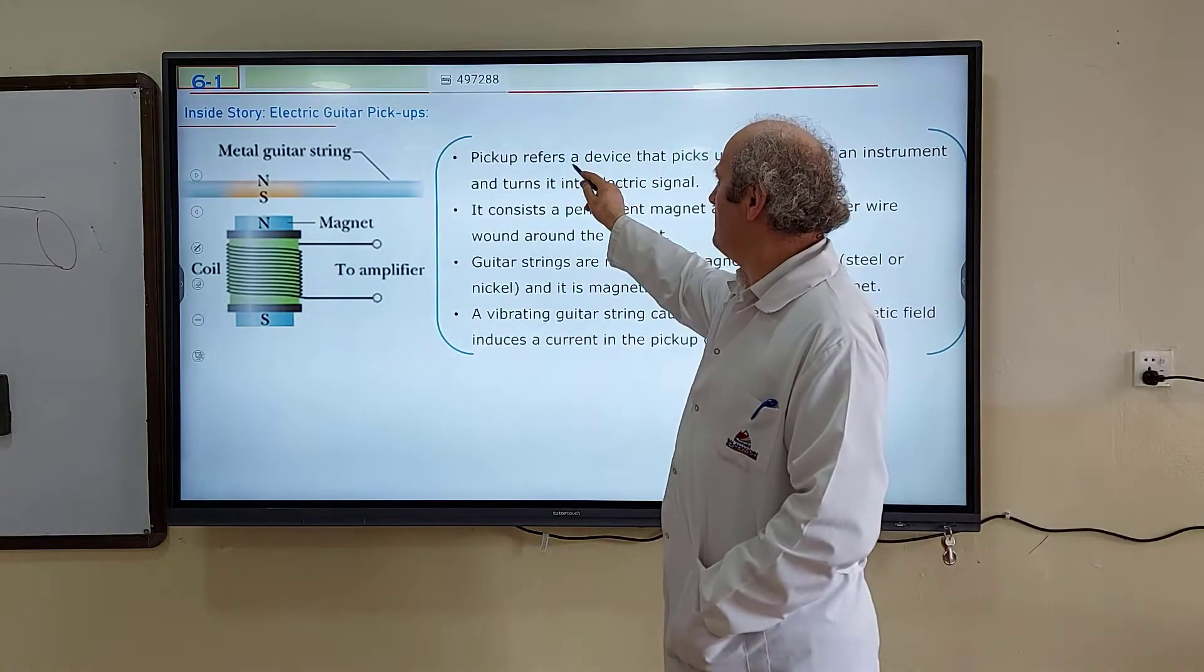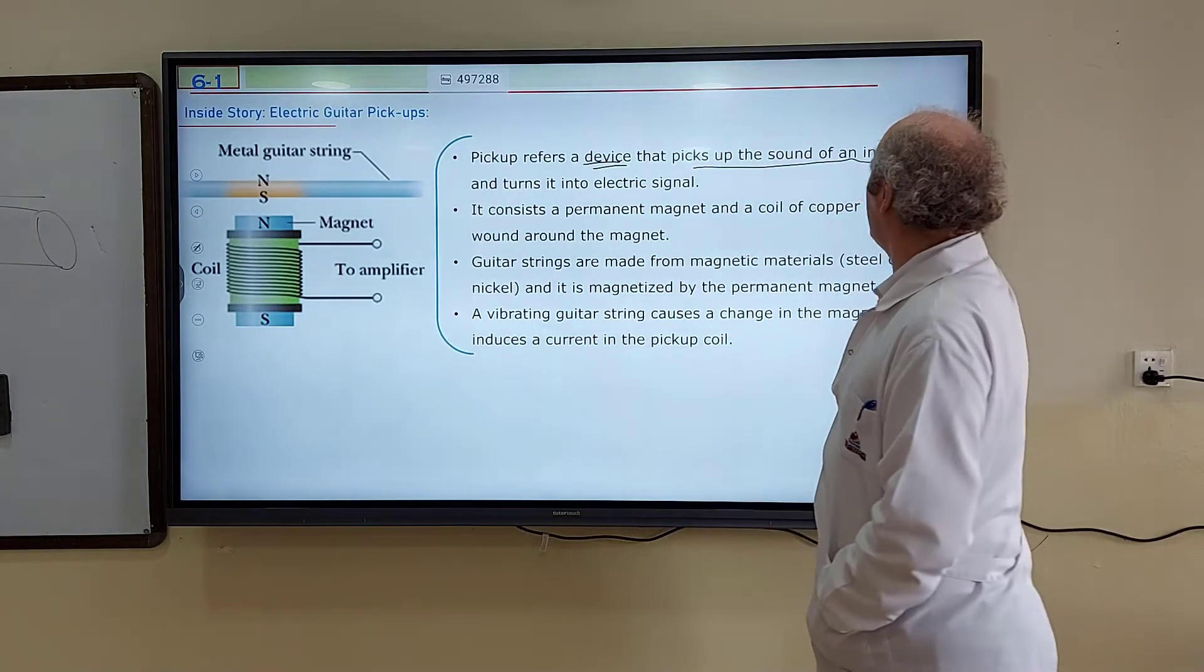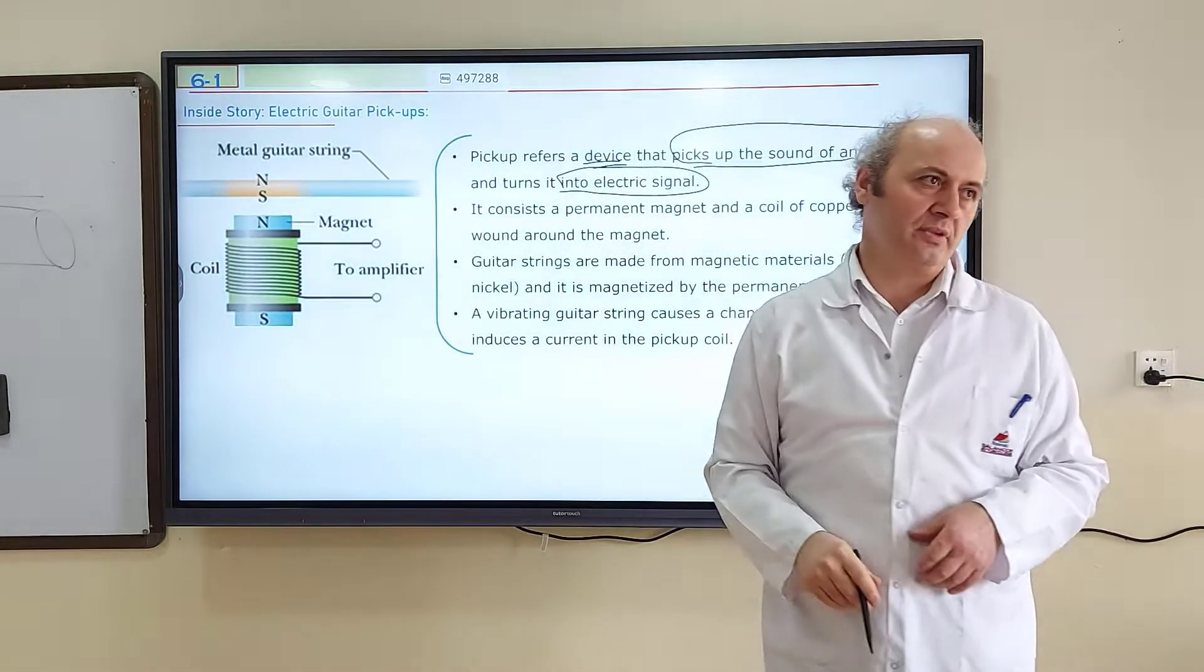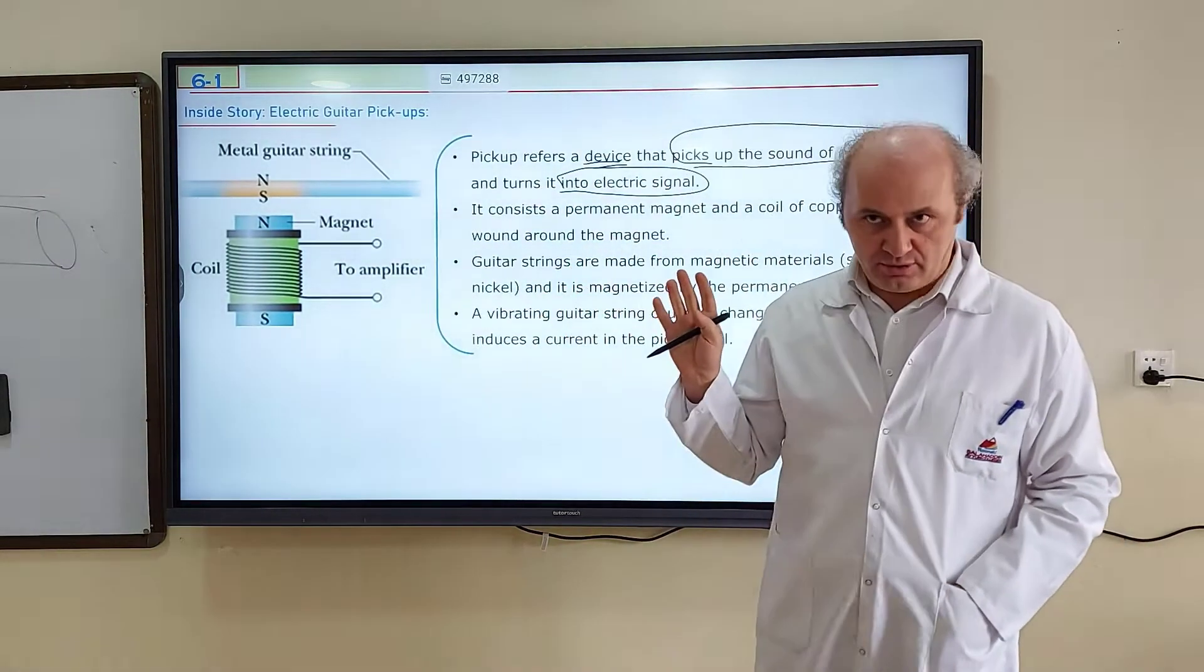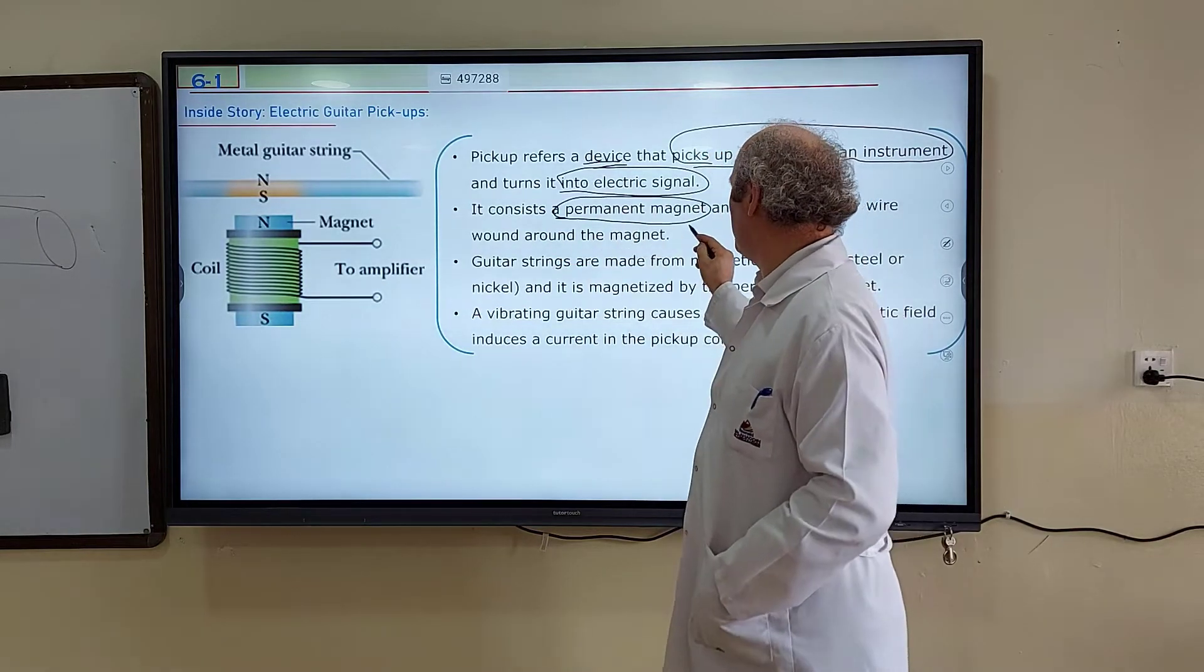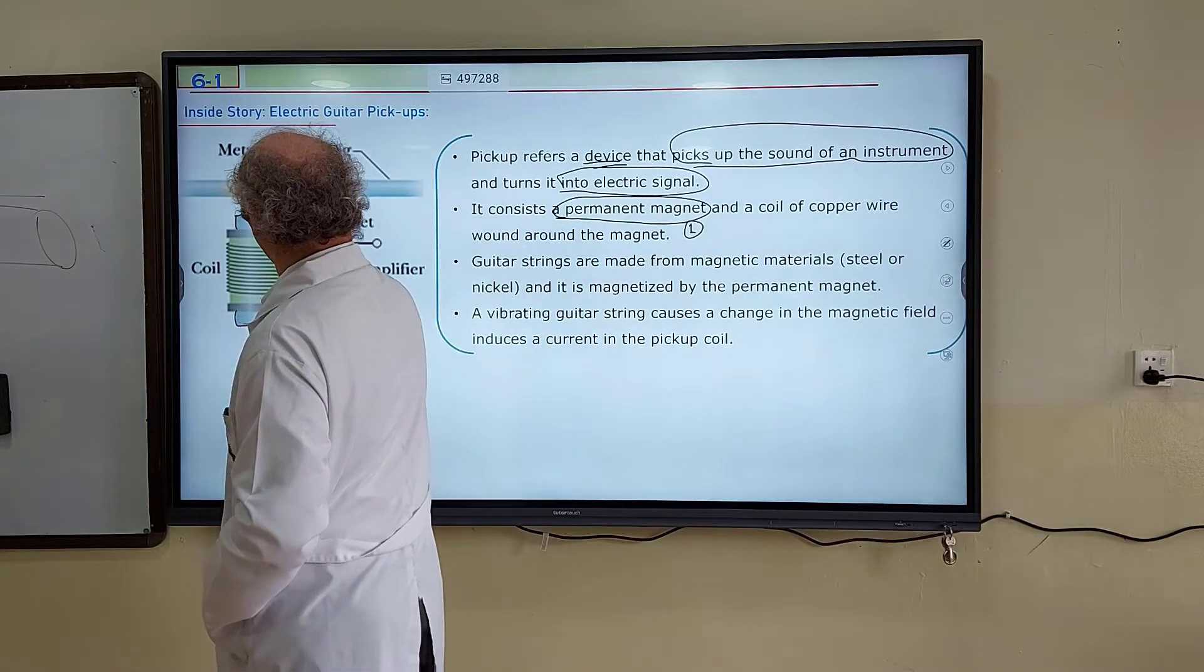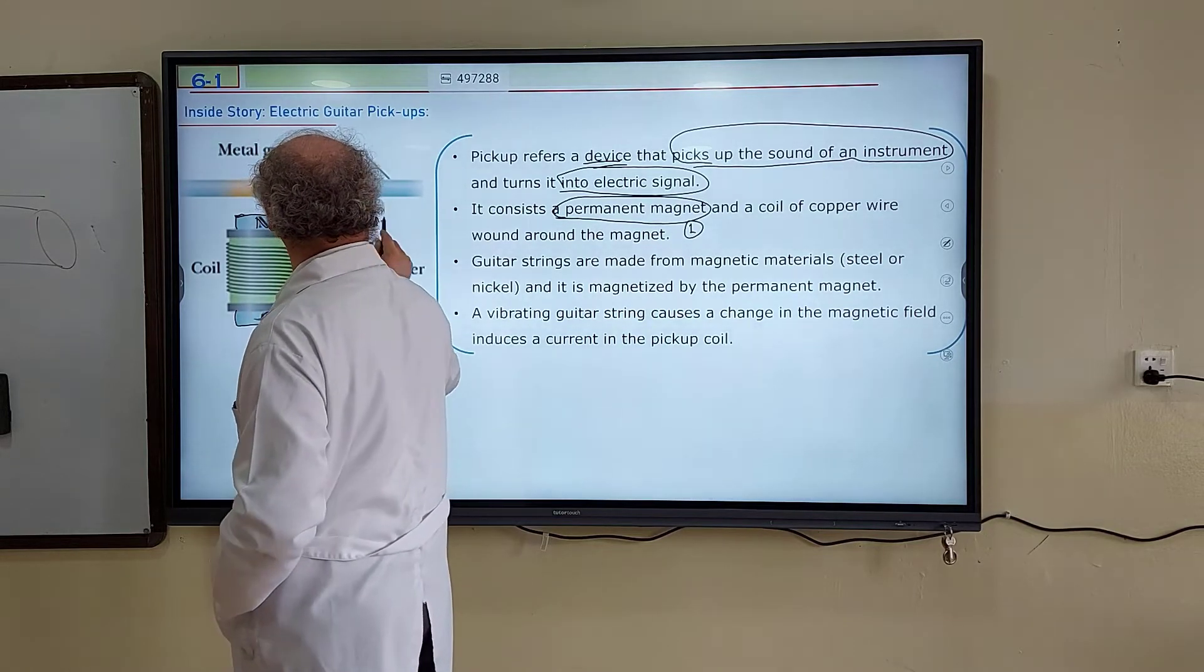And this definition is the definition of the pickups. You should better know it. Pickup refers to a device that picks up the sound of an instrument and converts it to electric signal, just as the microphone. And three basic components guitar pickups have. One of them is permanent magnet. So first component is a permanent magnet. N pole and S pole. You see that? Color is close to the blue. N pole and S pole. It's a permanent magnet, first component.